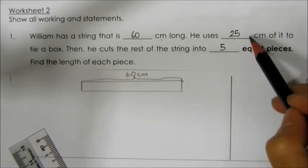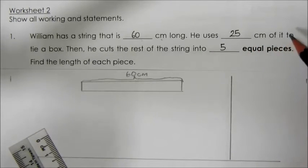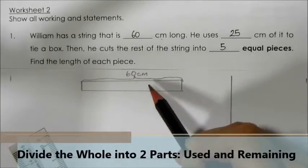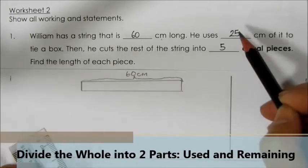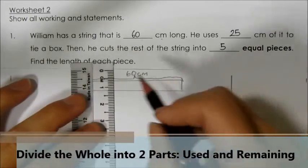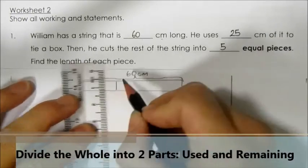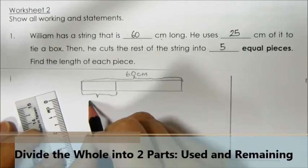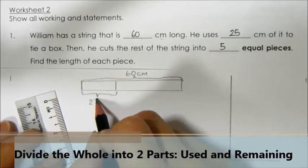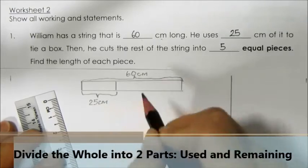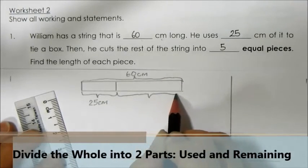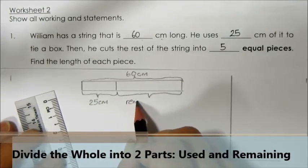Now, he uses 25cm of it to tie a box. So, I need to use this model to represent 25cm. This portion over here represents 25cm, and this part here represents the remaining length of the string.